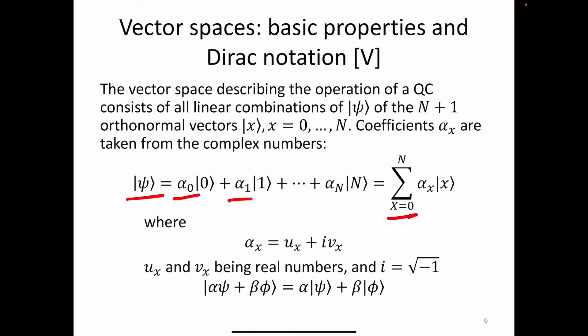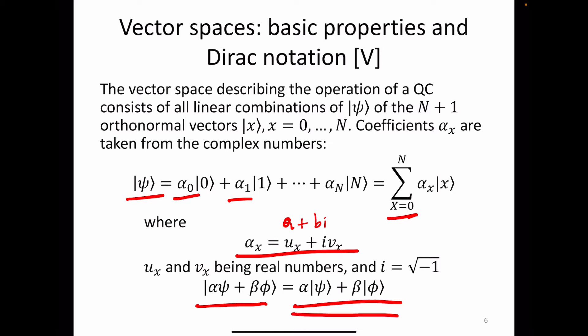Our probability amplitudes are complex numbers written as a plus bi, where a and b are real numbers and i equals the square root of minus 1 (i squared equals minus 1). One important notational point: you can write everything in one bracket, or write the probability amplitudes with separate states in brackets — these are exactly the same, and we will usually write it the second way in this lecture.